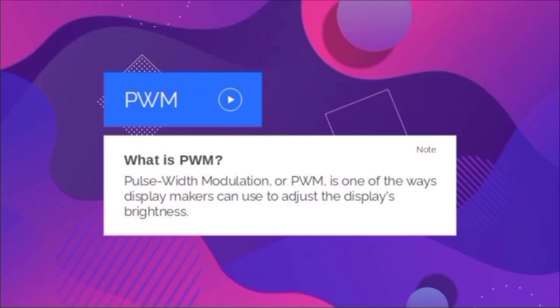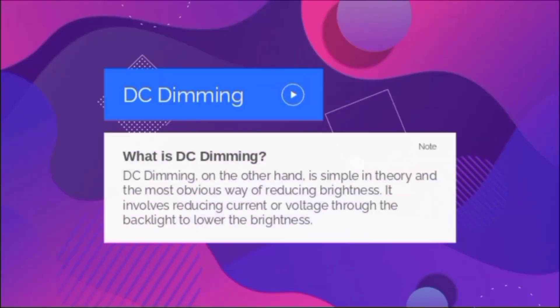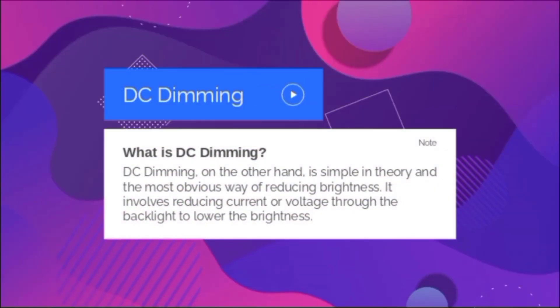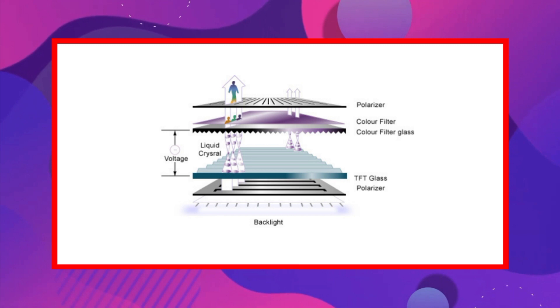The first thing is dimming technology — Pulse Width Modulation, or PWM. This is the way we use dimming technology. The other approach is DC Dimming, which works by adjusting the intensity of the backlight source.